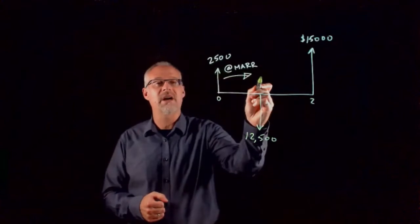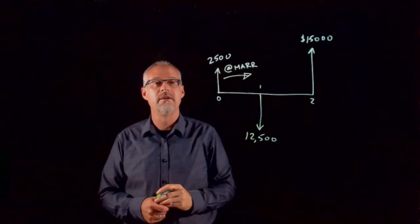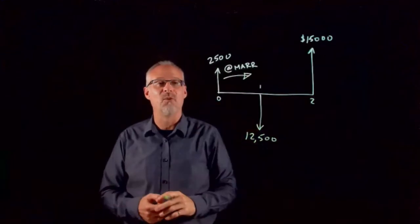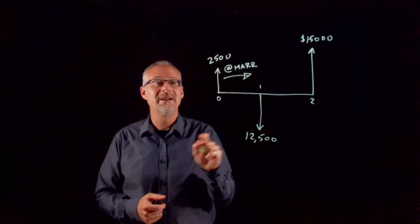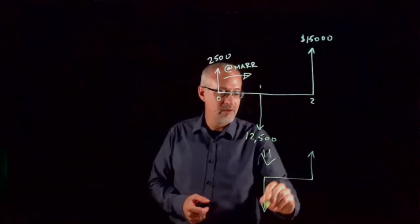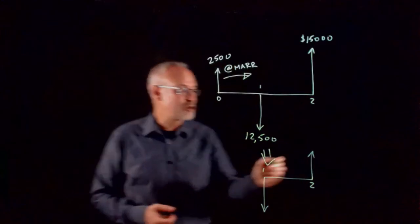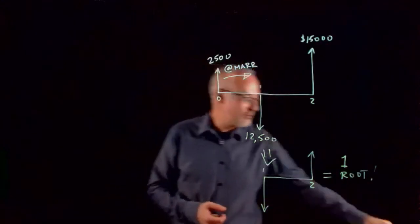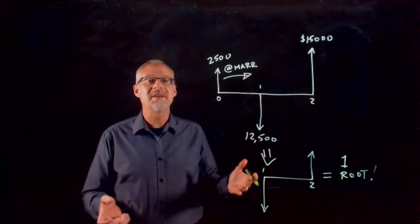We can take that forward in time and figure out what dollar amount we would have at time t equal to one. Then we could take the net cash flow at time t equal to one, because now we would have those two cash flows at the same point in time. What we would end up with is a cash flow diagram that all of a sudden looks like a simple investment, which should have one root. So that's it, that's the trick.